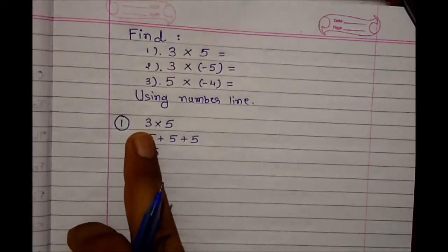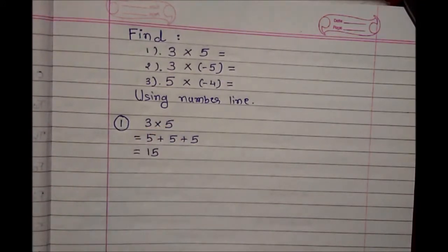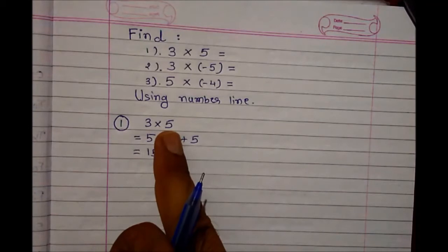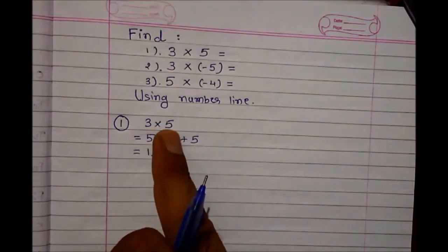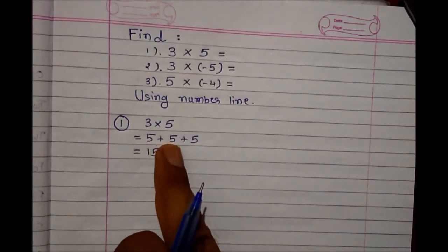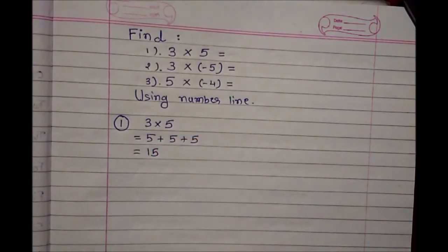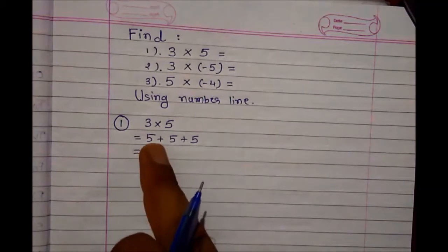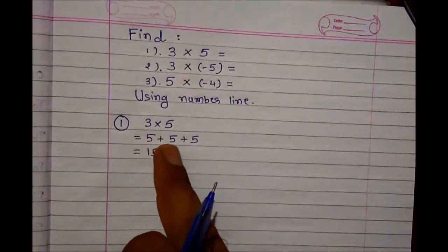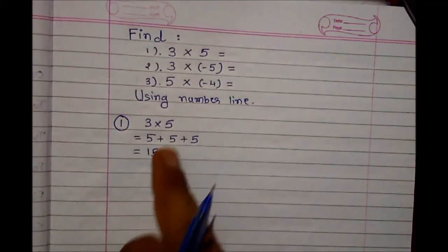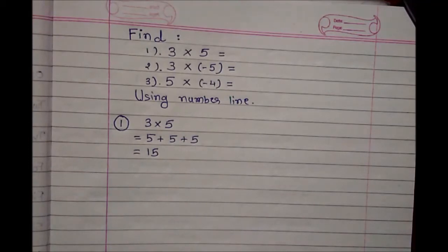For the first sum, 3 into 5 — we can represent 5 in the form of 3, meaning we have to take 5 three times: 1 time, 2 times, and 3 times. So 3 into 5 is 5 plus 5 plus 5, which is 15. So 3 into 5 is nothing but 15.